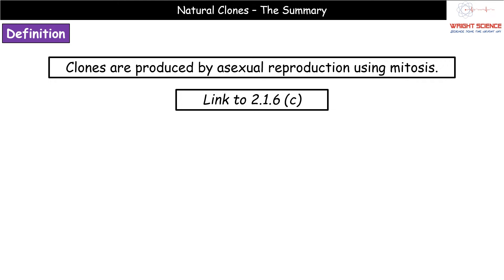In terms of how natural clones come into existence, this goes back to our earlier work in module 2 on the process of mitosis. Mitosis occurs within the asexual reproduction route, and this is how we make genetically identical offspring. Asexual reproduction involves only one parent, so all offspring will be genetically identical to the parent cell, through the process of mitosis.